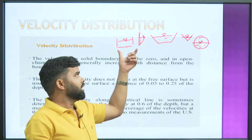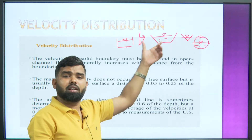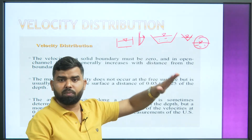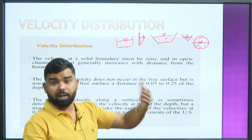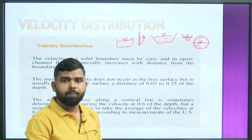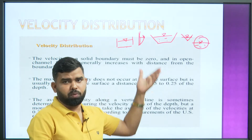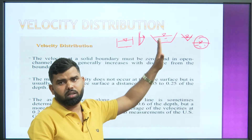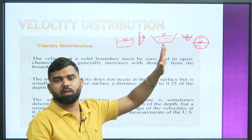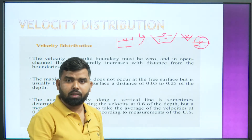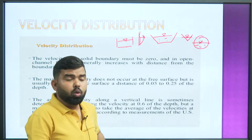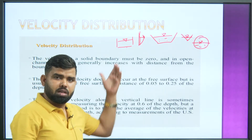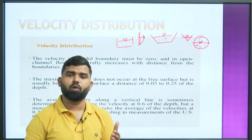In the last lecture we saw all types of channels — natural, artificial, prismatic, non-prismatic — which I discussed. On the basis of cross-section, I talked about rectangular, triangular, trapezoidal, circular and parabolic. So let us first study velocity distribution in these channel types and tell you about it.